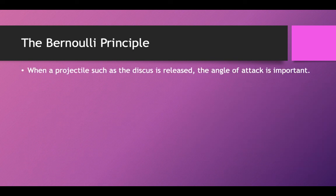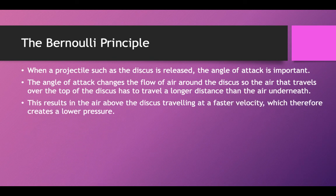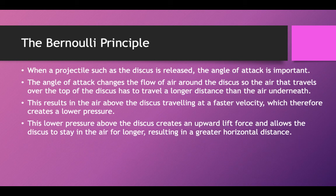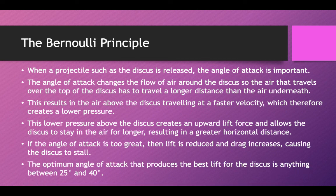When a projectile such as a discus is released, the angle of attack is important. The angle of attack changes the flow of air around the discus, so the air that travels over the top has to travel a longer distance than the air underneath. This results in the air above the discus travelling at a faster velocity, which creates a lower pressure. This lower pressure above the discus creates an upward lifting force and allows the discus to stay in the air for longer, resulting in a greater horizontal distance. If the angle of attack is too great, the lift is reduced and drag increases, causing the discus to stall. The optimum angle of attack for a discus is between 25 and 40 degrees.